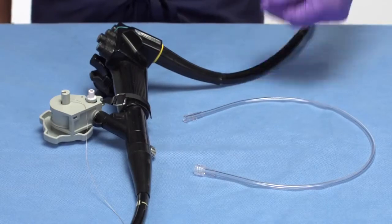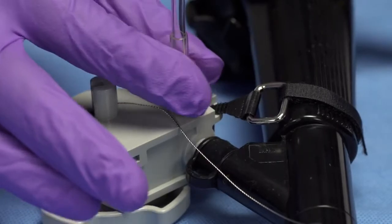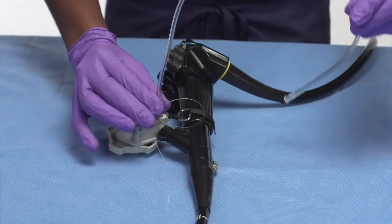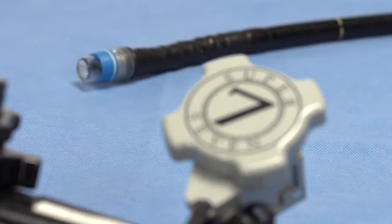For irrigation, attach a syringe or the irrigation tube provided to lure fitting on the irrigation valve. The SpeedBand SuperView Super7 device is now ready for use.